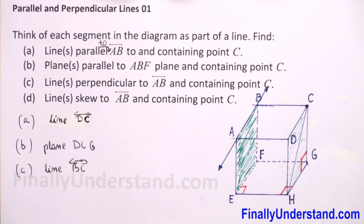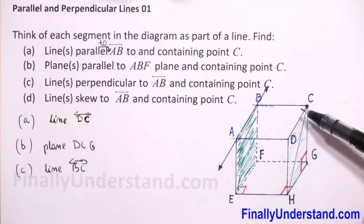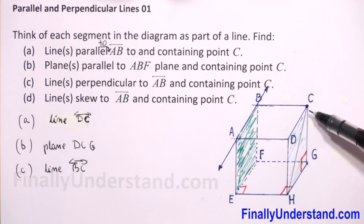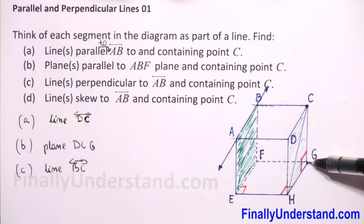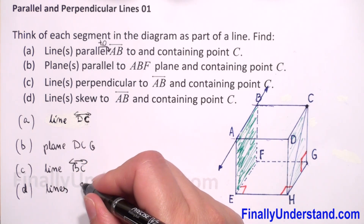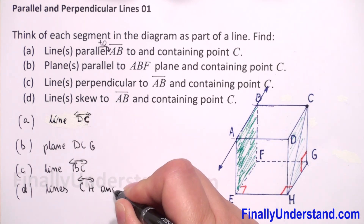Next we have to find lines skewed to AB and containing point C. Two lines are skewed if they do not intersect and are not coplanar. The skewed lines to AB that contain point C are line CH and line CG. So the answer to question D is lines CH and CG.